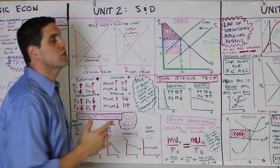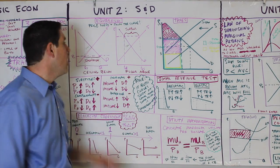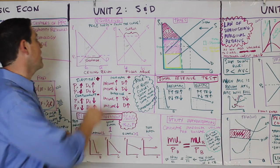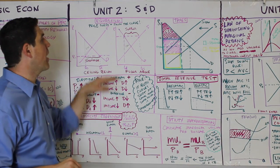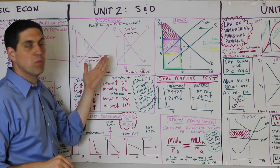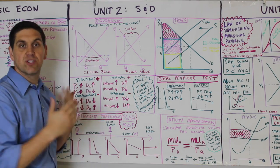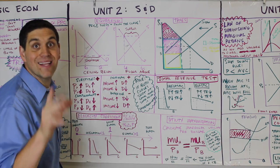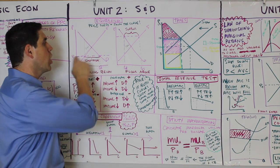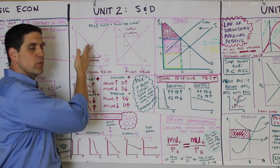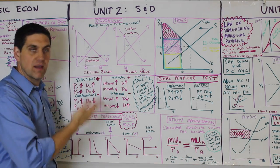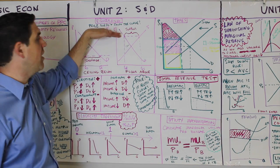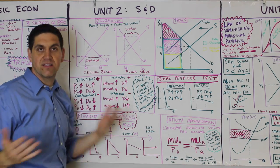Now it's time to jump into Unit 2: Supply and Demand. We've got equilibrium. If the price is too low, there's a shortage; if the price is too high, there's a surplus. Each of these situations can result in deadweight loss. If there is a price ceiling — ceilings go below — it will result in deadweight loss because we're not producing the amount society wants. And if there's a price floor — floors go above — it would also cause deadweight loss.